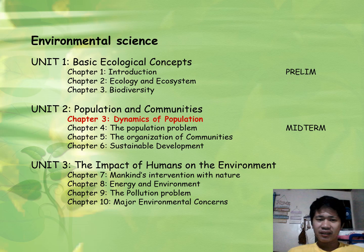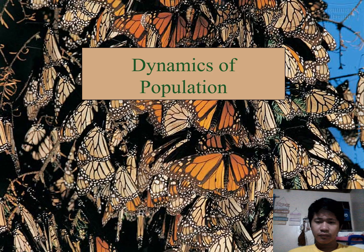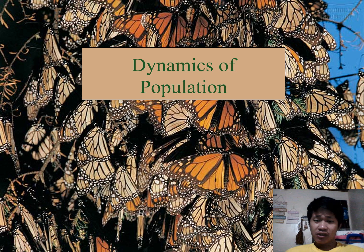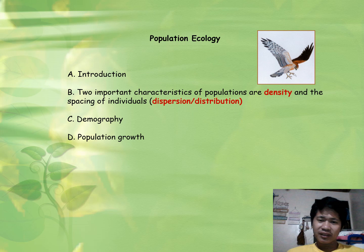For the midterm part, we're on Unit 2. The main focus here is the human population, since that is really our concern in environmental science. I will discuss two major characteristics of population: density and distribution. Then, after that, I will talk about demography and population growth.